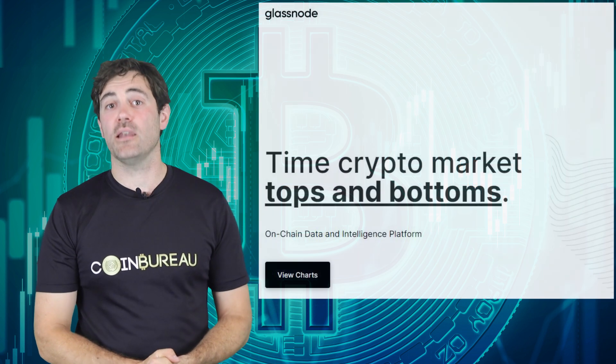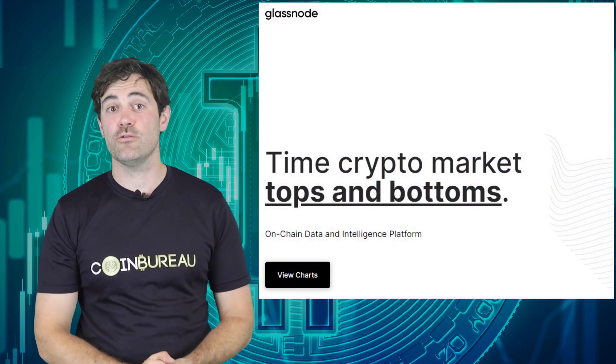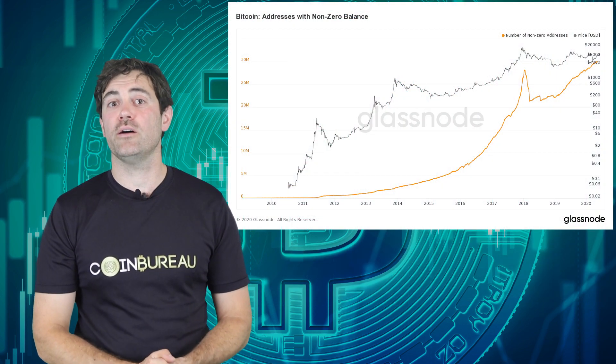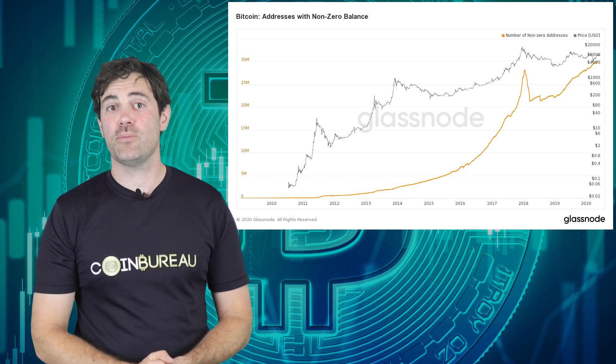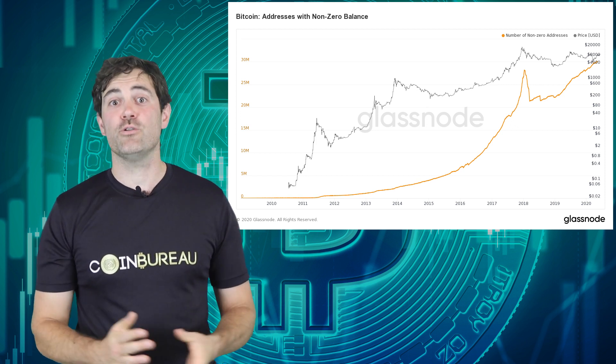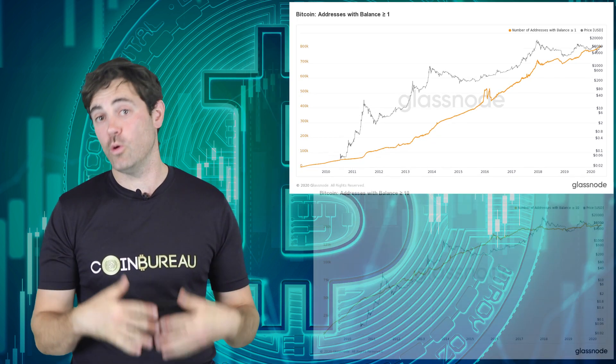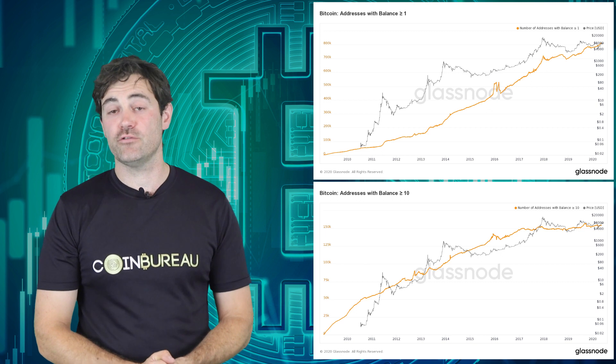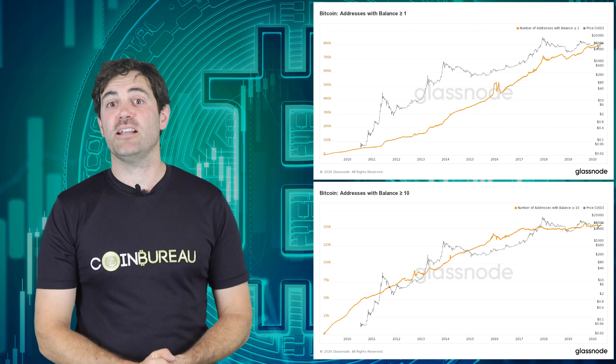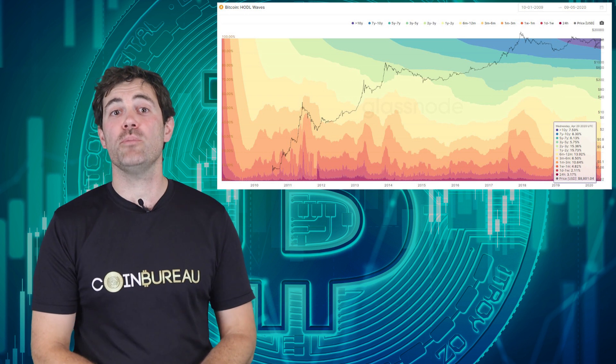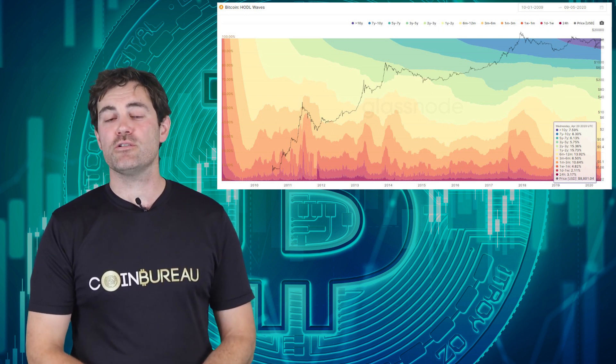Another site that should definitely be on your favorites tab is Glassnode. They offer a host of free data and charts that you can use to read the markets. Over here you have the total number of addresses that have a non-zero balance. This has steadily been climbing over the past year and is currently near an all-time high. You can even drill deeper and look at those that have more than one Bitcoin or more than ten, etc. Another really telling HODL metric is the percentage of Bitcoin that has not moved in a certain period of time. These are called the HODL waves, and the metric was developed by Unchained Capital. Glassnode lets you choose different timeframes for your HODL wave — the best metric to get a sense of real HODL addresses is those that have not been moved for a year or longer.